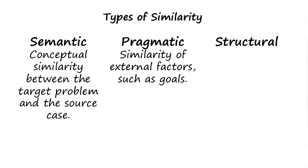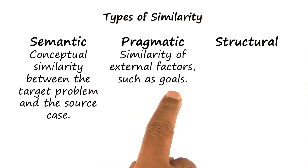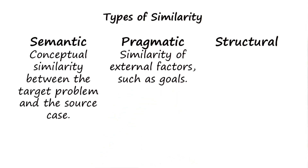Pragmatic similarity concerns external factors — factors external to the representation — such as goals. As an example, in the Duncker radiation problem, the physician had a goal of killing the tumor, which was similar to the goal of capturing the fort in the case of the rebel army and the king.